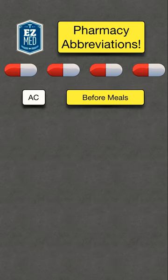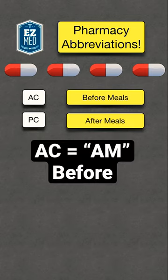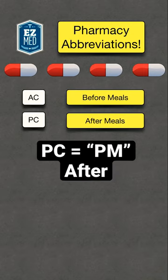Next, we have PC, which stands for after meals. For these, you can think of AC and AM to help you remember before, and you can think of PC and PM to remember after.